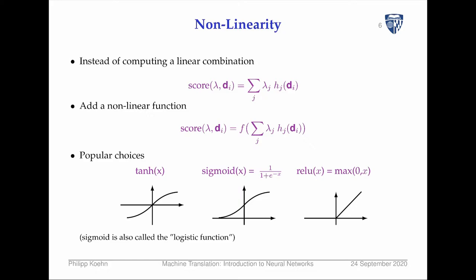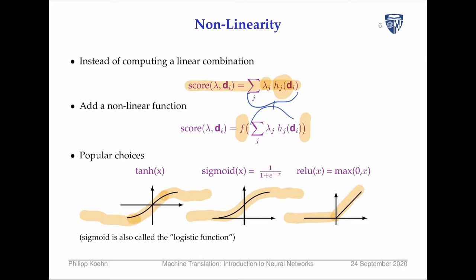What we need in addition is non-linearity. Previously we just computed a weighted sum of feature values with weights — that was our score. Now we're going to add a non-linear function that transforms that computed value. Here are some popular choices: tanh, which starts flat, has an area where score differences matter, then is flat again; sigmoid, which looks similar but only has positive outputs; and ReLU, which is popular in machine learning for its simpler mathematical properties, though it has one non-differentiable point in the middle.